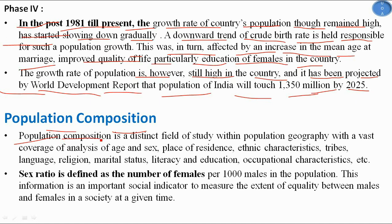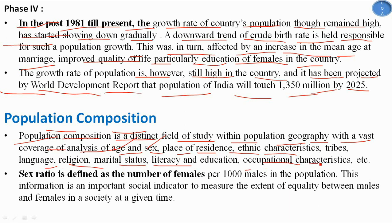Population composition is a distinct field of study within population geography covering the analysis of age, sex, place of residence, ethnic characteristics, tribes, language, religion, marital status, literacy and education, and occupational characteristics — all of which together show the population composition of a country.